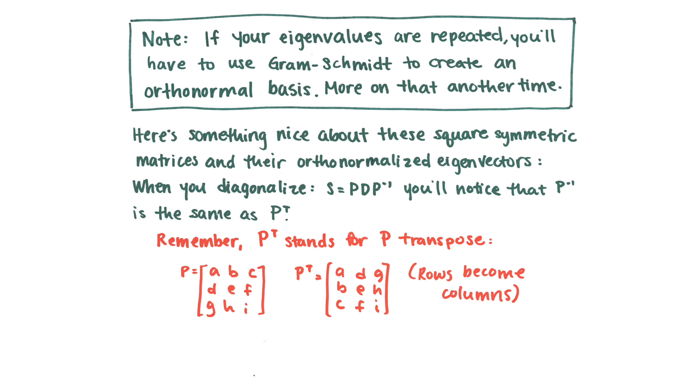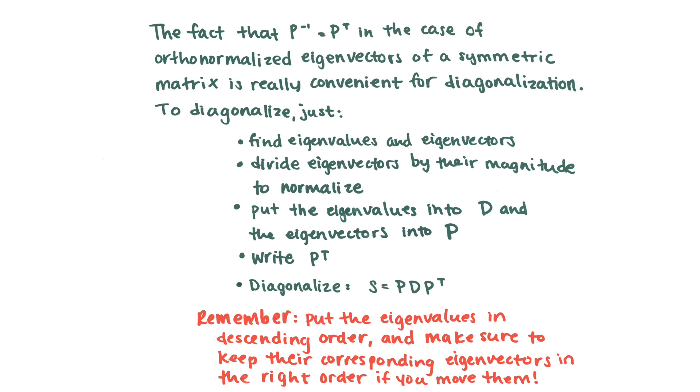So moving along, there's something nice about these square symmetric matrices and their orthonormalized eigenvectors, which is what we just did, which is that when you diagonalize them, for example, the S we had, into PDP inverse, you might notice that P inverse is the same thing as P transpose. So if you look at this, P transpose stands for when you turn the rows into columns. And you can see that I've switched those there for you to see. The fact that P inverse is P transpose, in the case of orthonormalized eigenvectors of a symmetric matrix, is really convenient for diagonalization. Because instead of finding the inverse, we can just take the transpose.